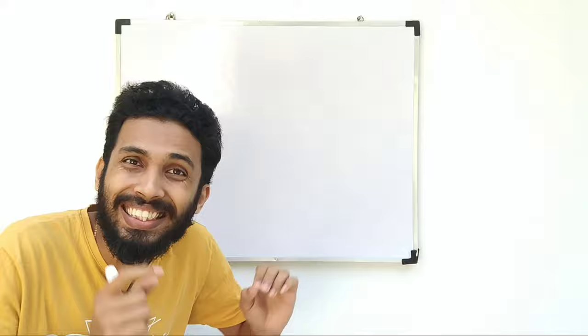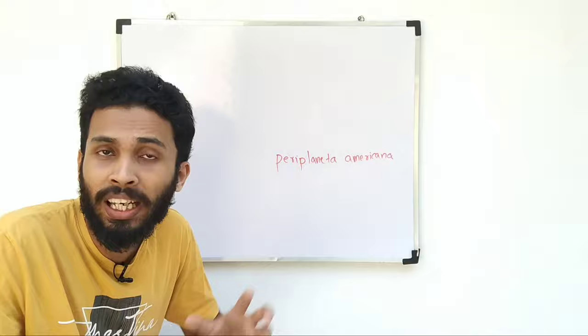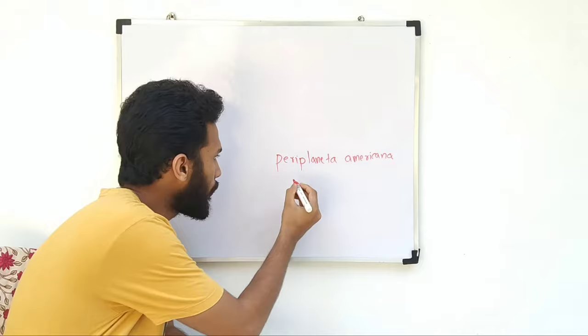What is this cockroach called? Periplaneta Americana. If you want to write about Periplaneta Americana, the size is 34 to 53 mm.